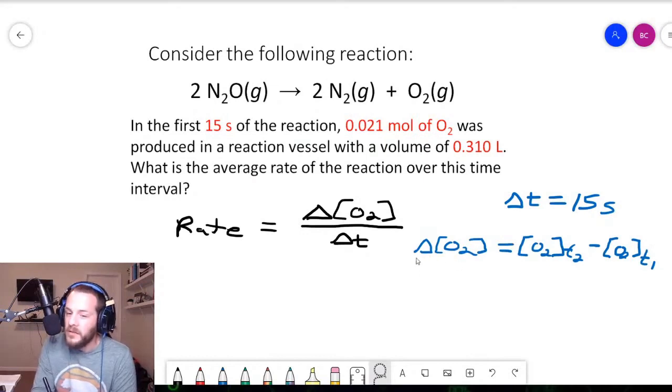The change, the delta concentration of oxygen is the final concentration of oxygen, or the concentration of oxygen after 15 seconds, minus the initial. Now, the initial concentration of the oxygen is simply zero, because in the very beginning of the reaction, you didn't have any, it wasn't formed yet. So we can simply cross this out from the formula. So the change in oxygen concentration is simply going to be the oxygen concentration at time two.